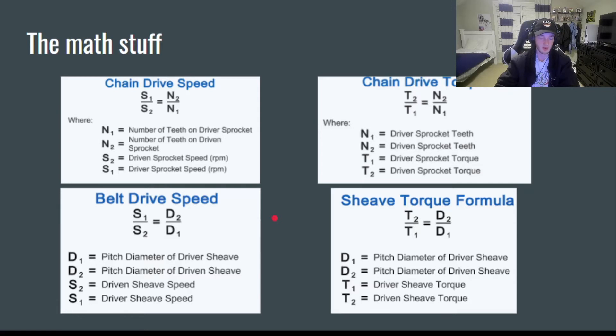So as we already know, driver sheaves and sprockets proportionally affect the speed and torque of driven sheaves and sprockets based on the difference in their pitch diameters or number of teeth. Using this information, we can calculate speed and torque using a proportion.